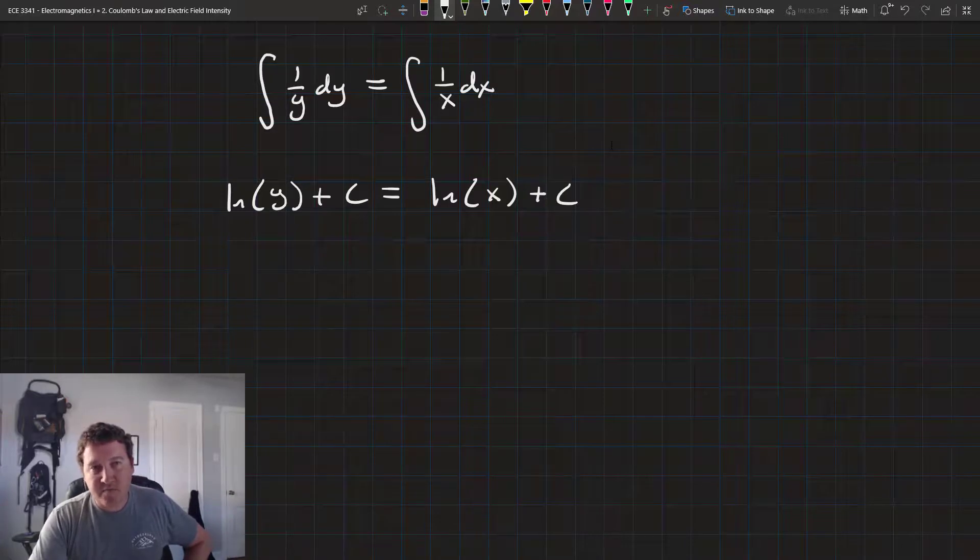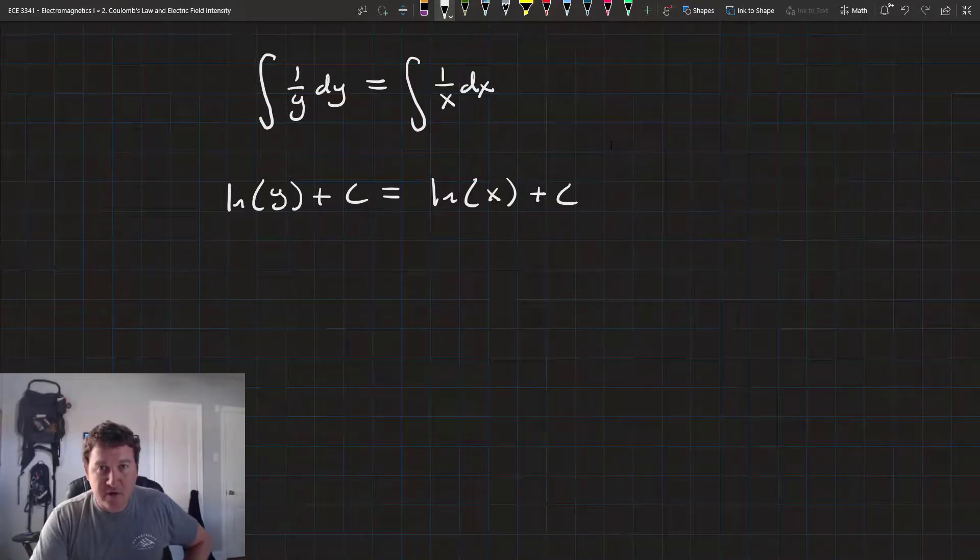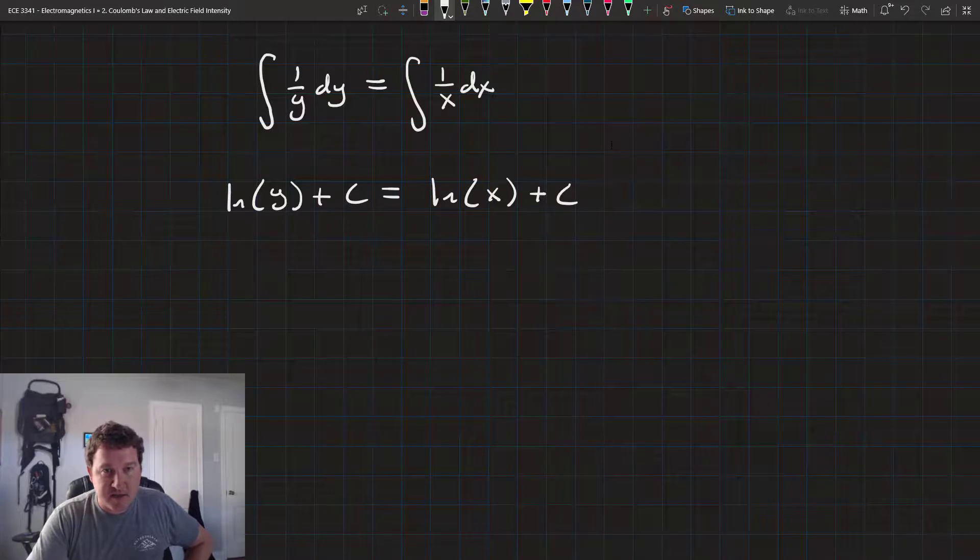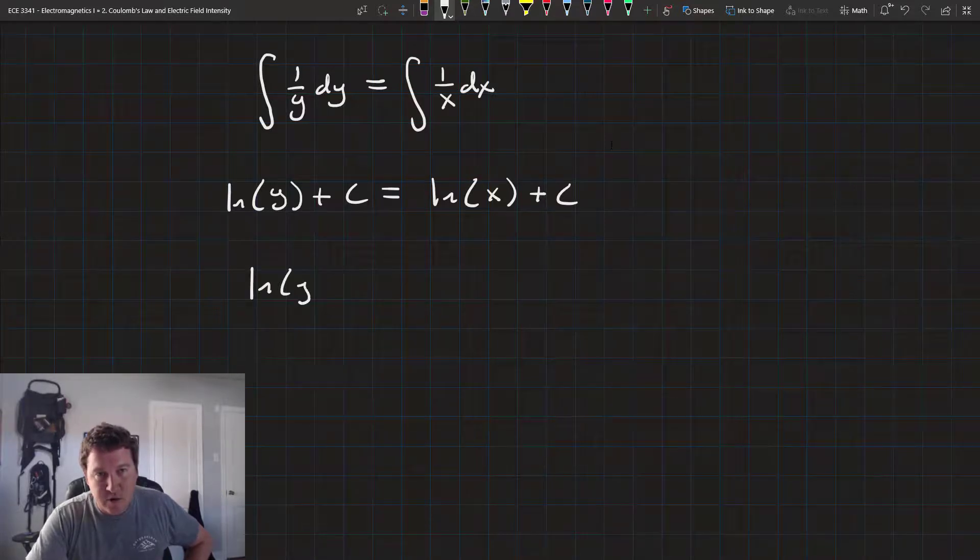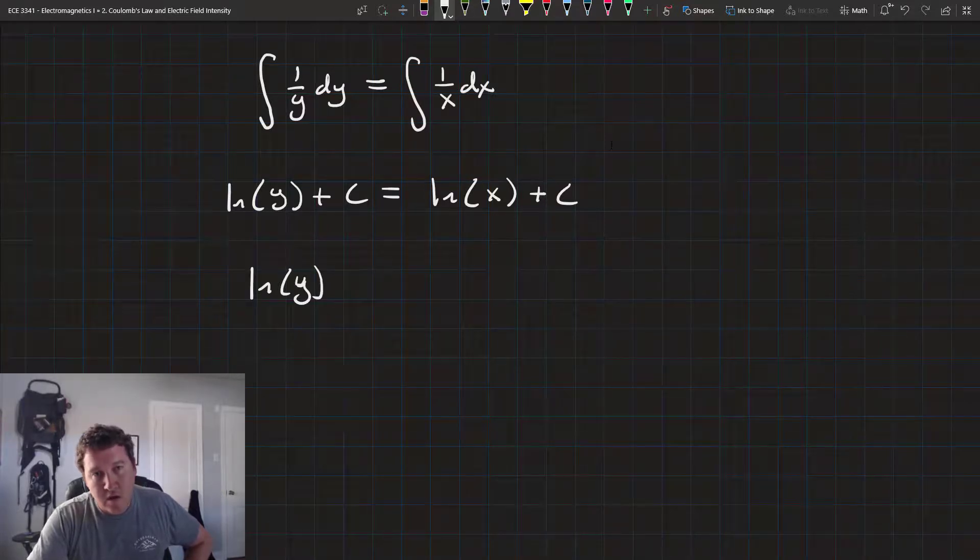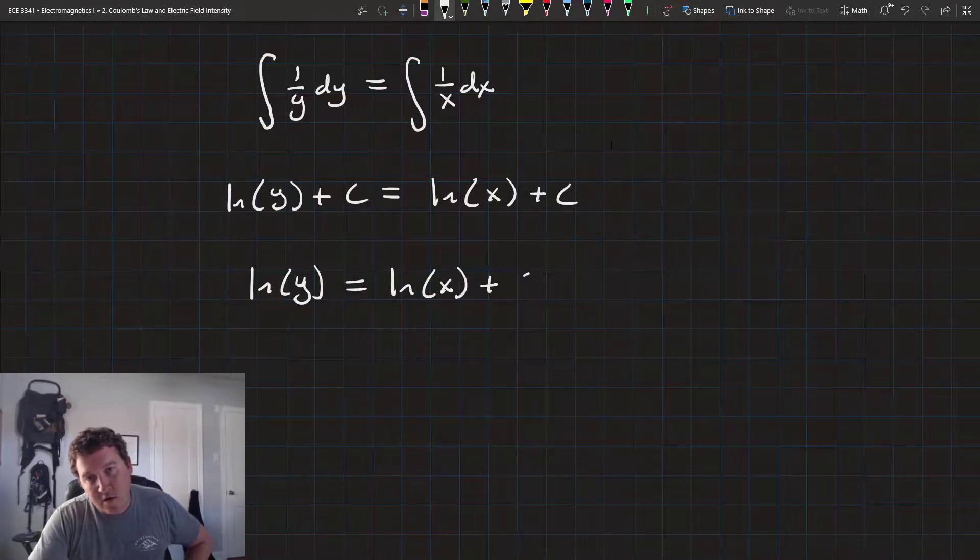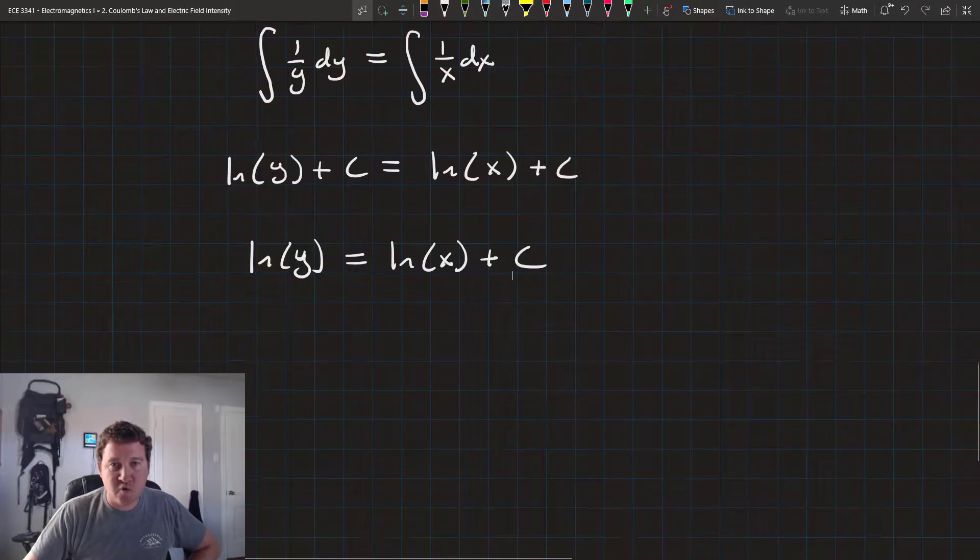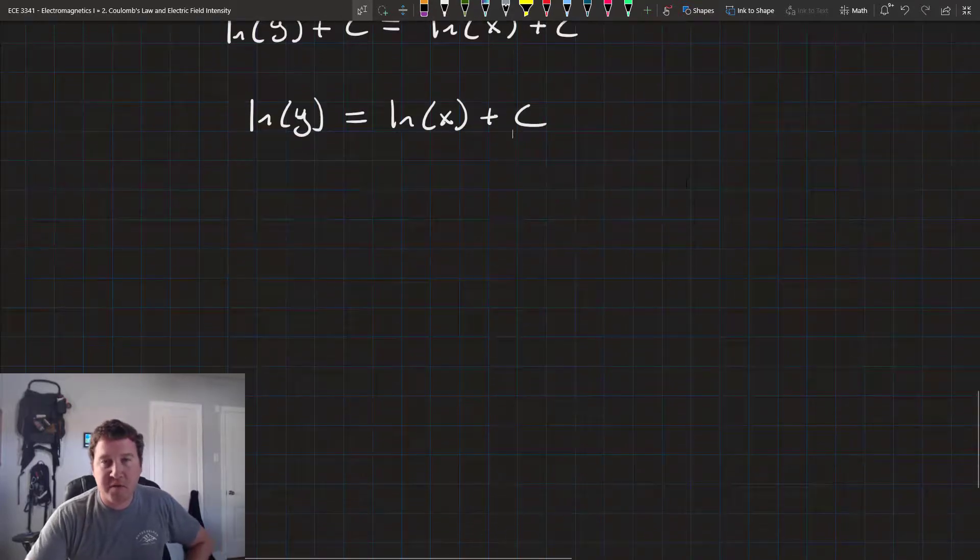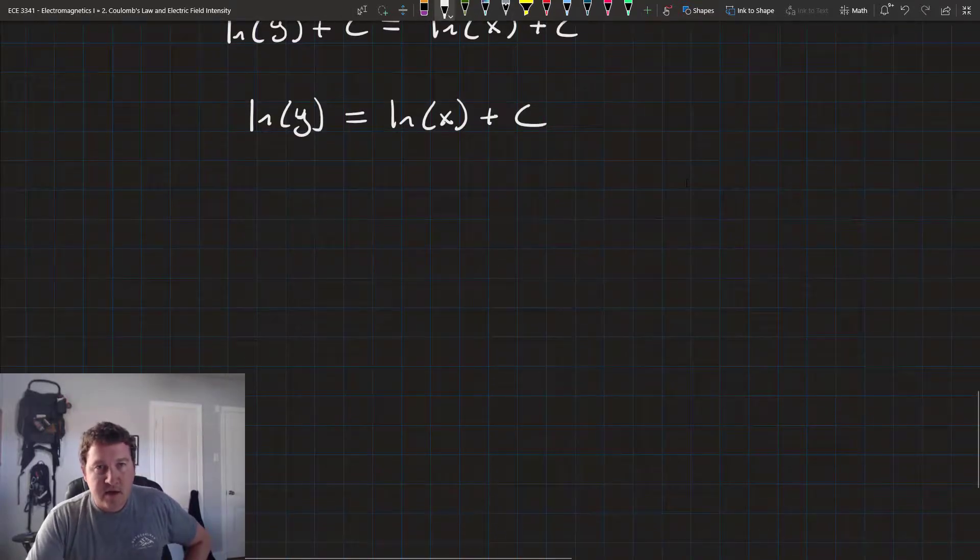We can combine both these constants by bringing this other plus c over here and plus c minus c is all just constants, so we don't really care. And we'll get the natural log of y equals the natural log of x plus c. The constants just sort of absorb each other. We're not really interested in what they are just yet.